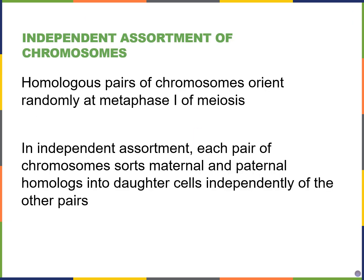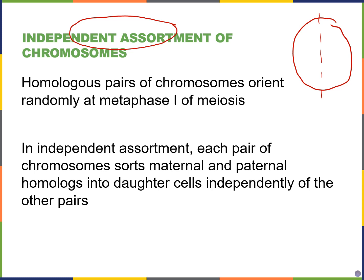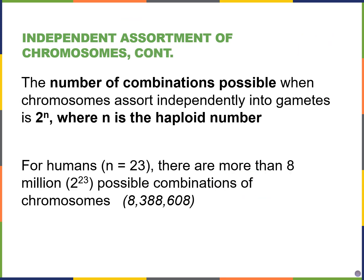This is known as independent assortment — sometimes called random assortment. At the metaphase plate, the way the chromosomes line up is completely random: this could be mom, this could be dad; in the next set it could be dad, mom, dad, mom, mom, dad. It's random, and each pair of homologous chromosomes sorts randomly and independently of the other pairs. In addition to crossing over, independent assortment contributes largely to genetic diversity in offspring.